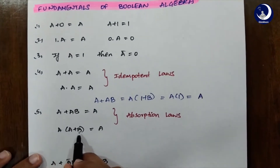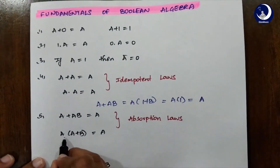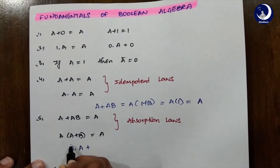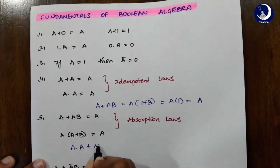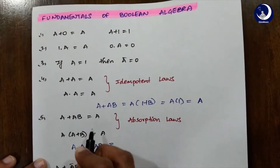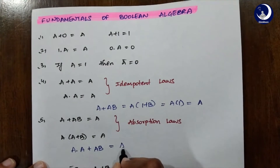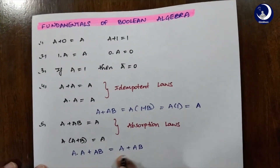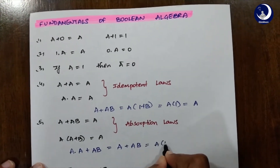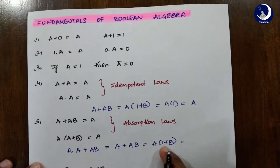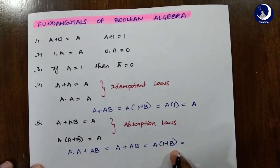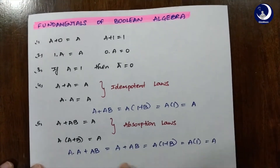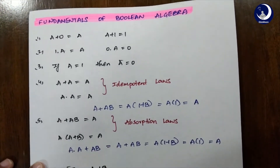Now again A·(A+B)=A. How do we solve this? So A·A + A·B. Now A·A can be written as just A, so we get A+AB. From these two terms we can take A as common: A into (1+B). Now similarly 1 plus anything equals 1, so A into 1 equals A. That's what our absorption law is all about.